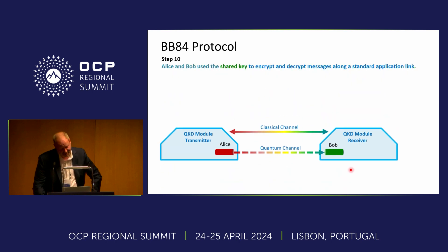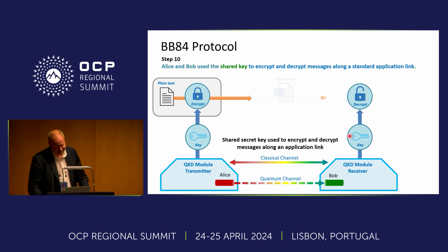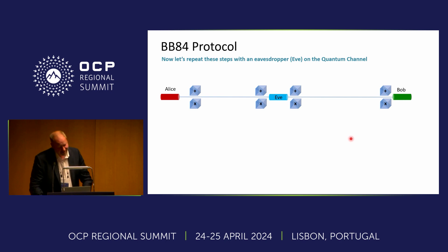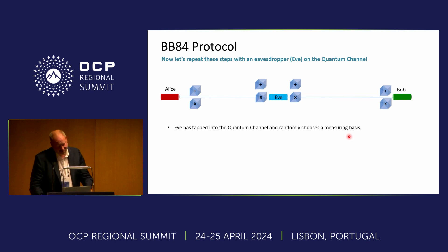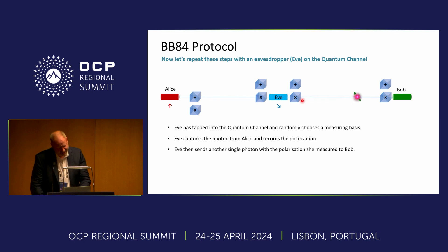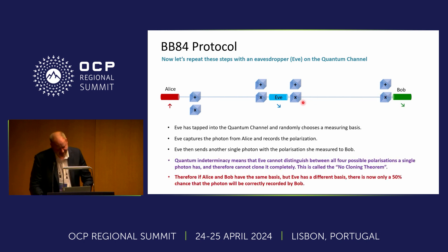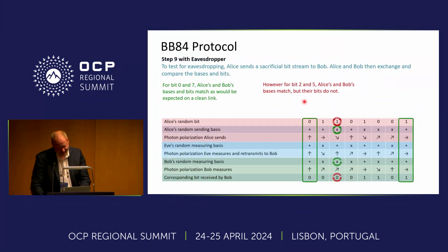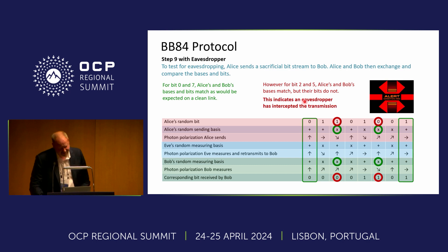They then use that sifted key to send their data along classical channels. The idea is that if there is an interceptor — an Eve in the middle — who also doesn't know the bases, it will skew the statistics. You'll get a spike in errors because Eve does not know the bases of Alice. All she can do is copy what she's received based on her own bases, so you will get, statistically speaking, a higher error rate. So you know immediately, when they compare matched bases and see the higher error rate, there's a higher probability that there was an interceptor.